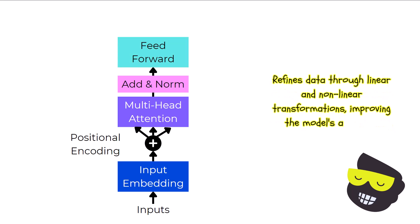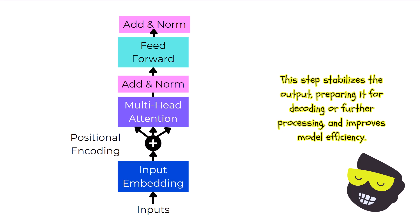After the multi-head attention layer, the data moves to a feed-forward network. This part of the model acts like a fine-tuning tool. It takes the information and applies a series of transformations to make it more precise and useful. The network first uses linear transformations, which adjust the data based on weighted sums, kind of like adjusting the volume on a stereo. Then, it applies non-linear activation functions, which help the model understand more complex patterns by adding curves to the data's representation. The final add-a-norm step ensures that the refined data is ready for the next stages, like decoding or further processing, by stabilizing the output and enhancing efficiency.